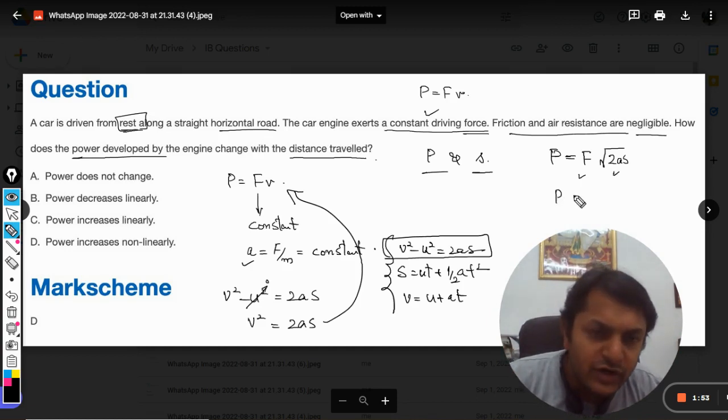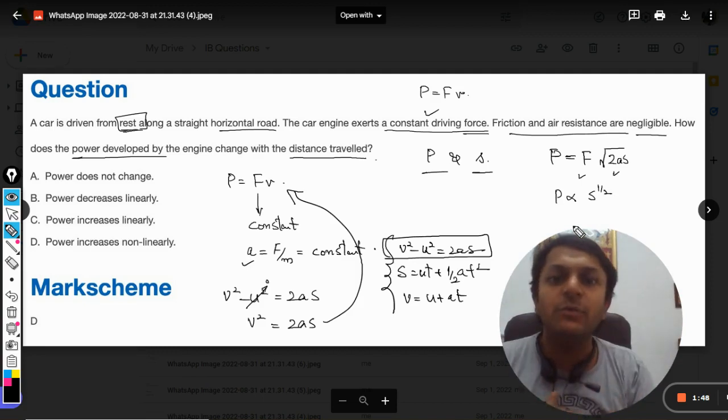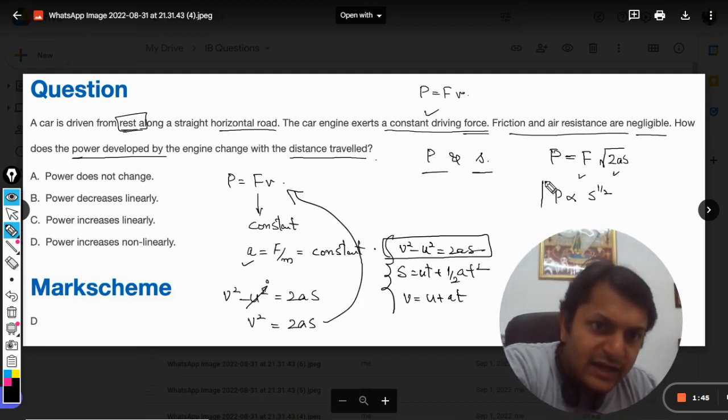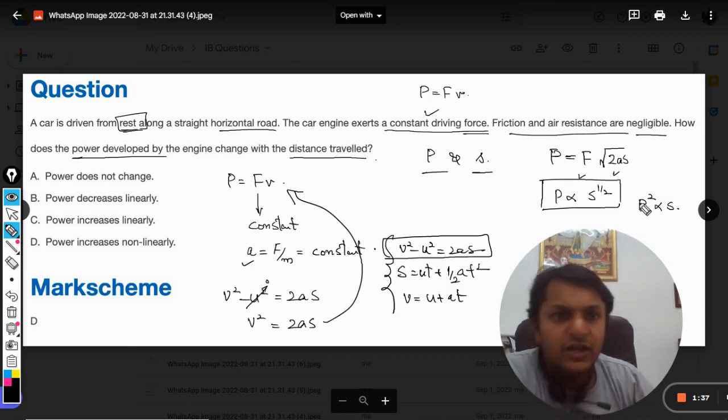In this formula, the force is constant and acceleration is constant, so there is a formula that power is directly proportional to the square root of displacement. We have found the relationship: P² is directly proportional to s.